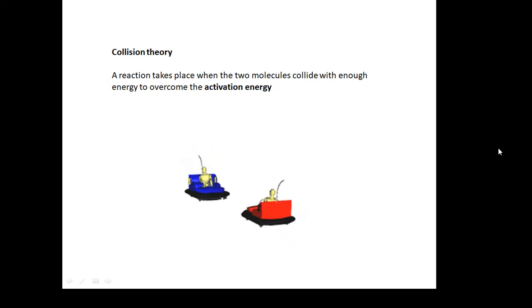Collision theory basically says that a reaction takes place when two molecules bang into each other with enough energy. If you imagine two molecules jiggling around in a liquid, they bang into each other. And if they have enough energy, then we talked in the last video about activation energy. If they have enough energy, then a chemical reaction might happen. And this is called collision theory.